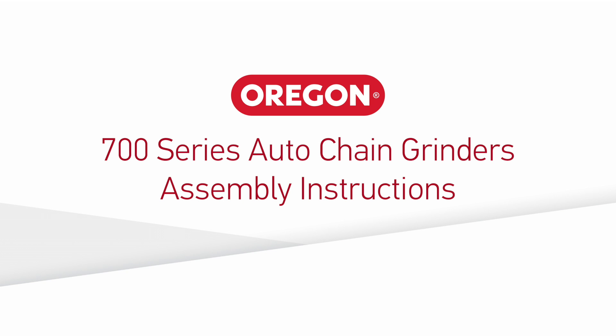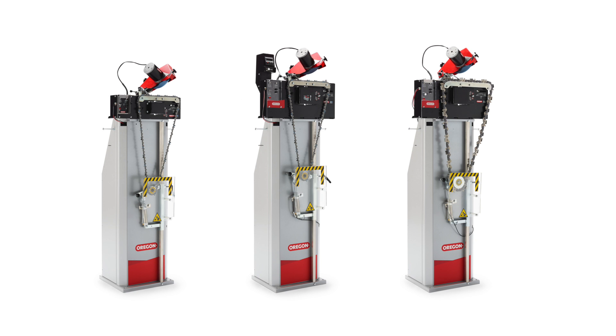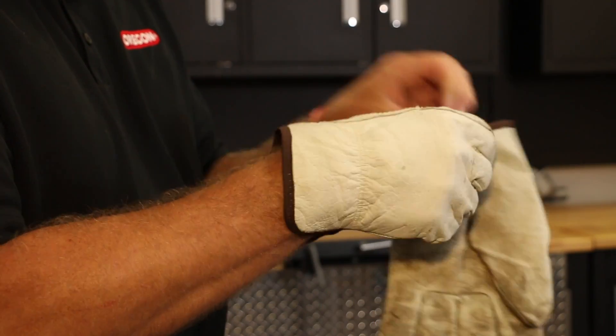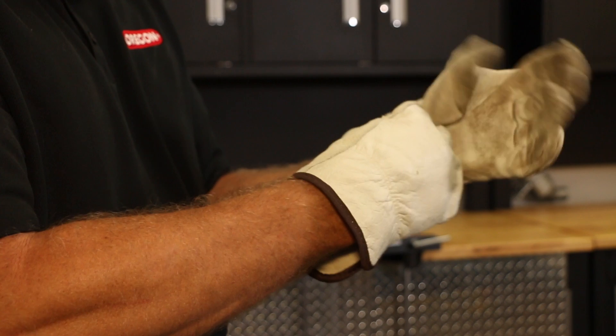This video will illustrate the steps for properly assembling Oregon 700 Series Auto Chain Grinders. Before using the grinders, be sure to read and understand the information provided in the owner's manual. Please note safety glasses should always be worn when the machine is running, and protective gloves should be used when handling the chain and the wheel.